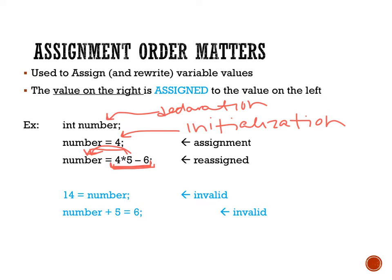If you look at the bottom in blue, I have two invalid statements. First, remember we are always saving the value on the right into the variable on the left. Putting 14 on the left doesn't make sense — 14 is stuck, it can't be changed. To be a valid statement, it would need to be number equals 14. The variable name always needs to be on the left. The other issue is that students say number plus 5 has to equal 6, but you need the variable name on the left by itself.